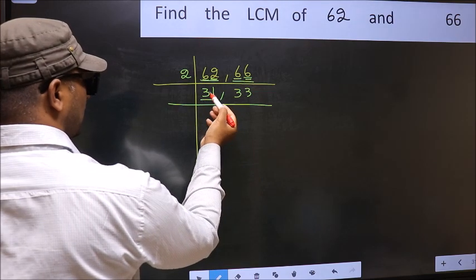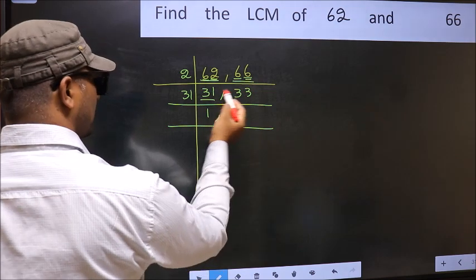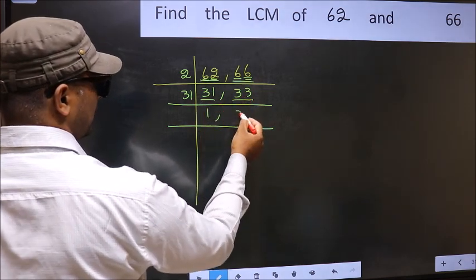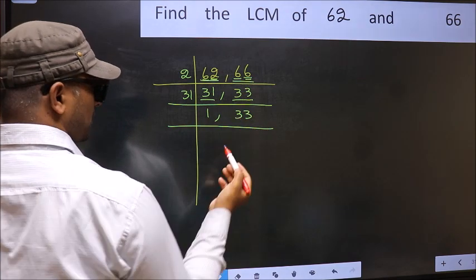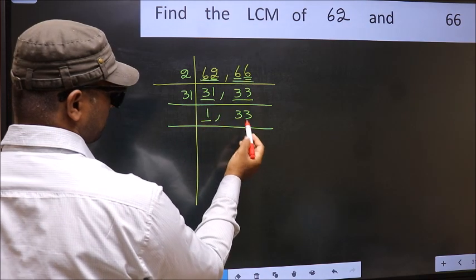Now, here we have 31. 31 is a prime number. So, 31 wants 31. The other number, 33, not divisible by 31. So, we write it down as it is. Now, we got 1 here. So, focus on the other number.